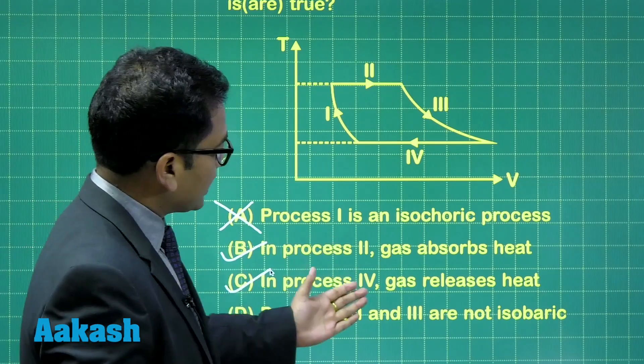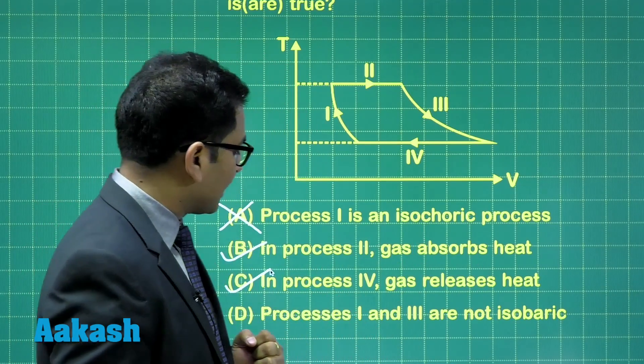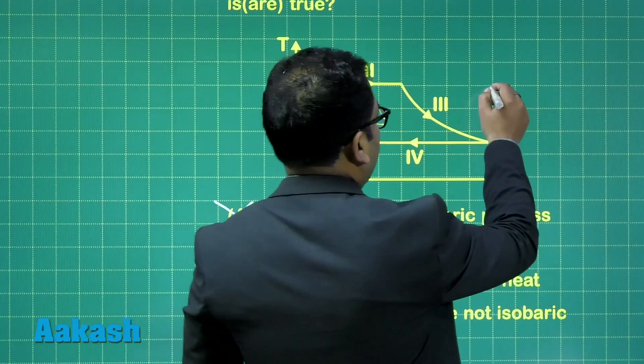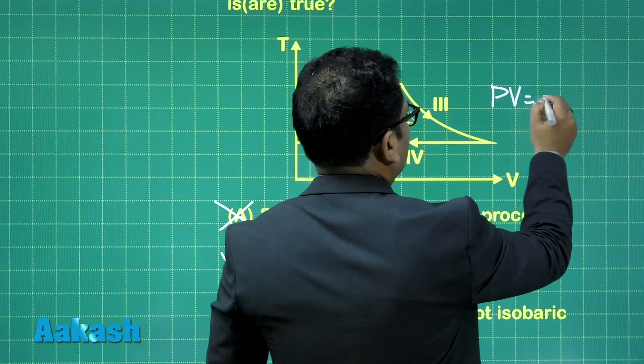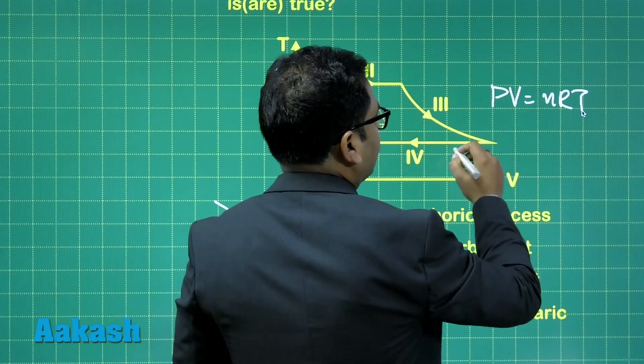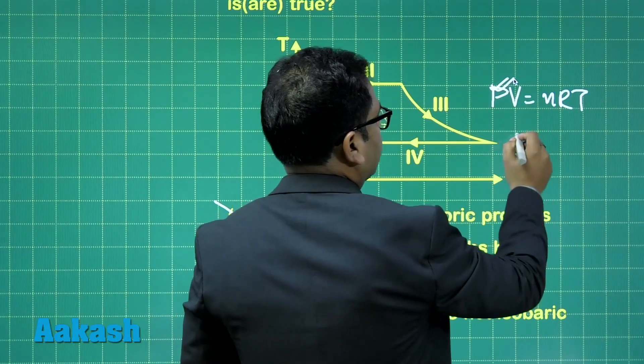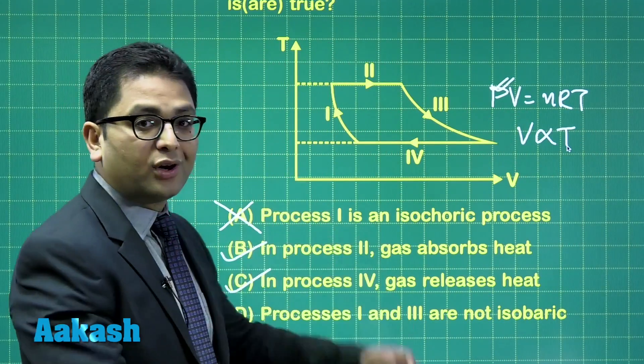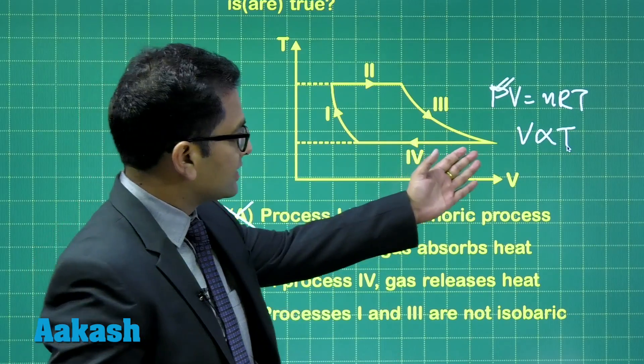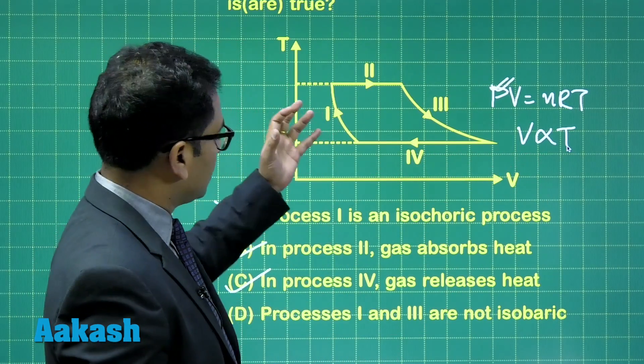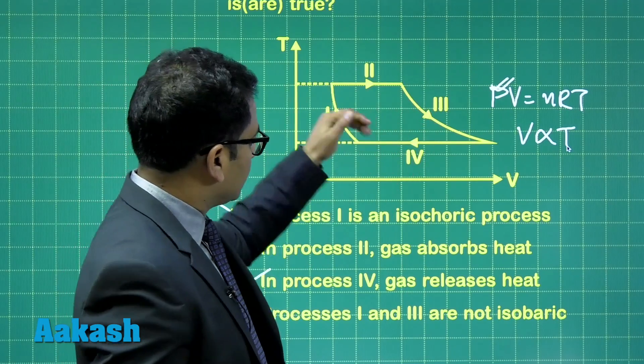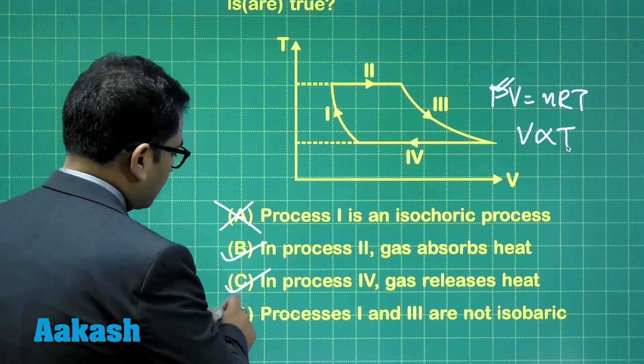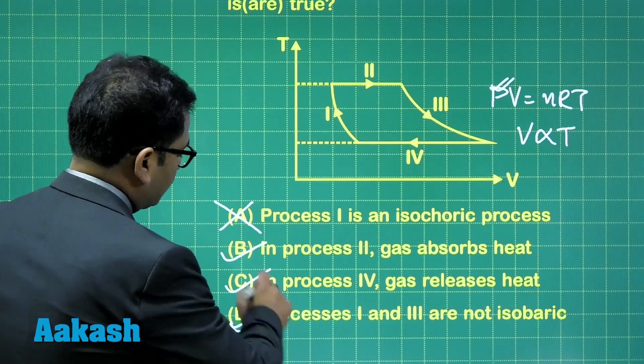Now, processes one and three are not isobaric. If you have PV = nRT and the process is isobaric, in other words P is constant, then V would be directly proportional to T. So a TV graph for isobaric would be a straight line, while curves one and three are not straight lines, so they must not be isobaric processes. Hence option D has to be correct.